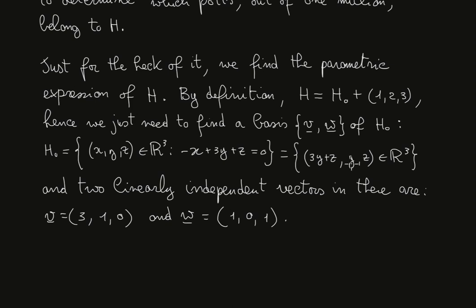Now, to find the basis of H₀, we just need to find two linearly independent vectors inside this set. And how do we find them? Well, first we can choose, since all the vectors inside H₀ correspond to a choice of y and z, we can first start to choose y=1 and z=0, and then y=0 and z=1, and we will surely get two linearly independent vectors. So we can set v to be (3, 1, 0) corresponding to the choice of y equals 1 and z equals 0, and w is, so y equals 0, z equals 1, and consequently x equals 1.